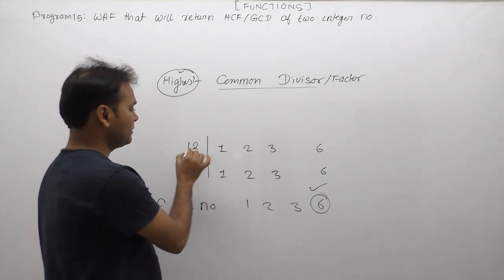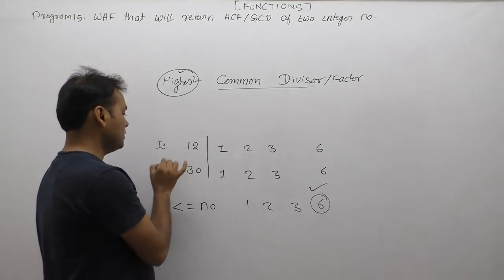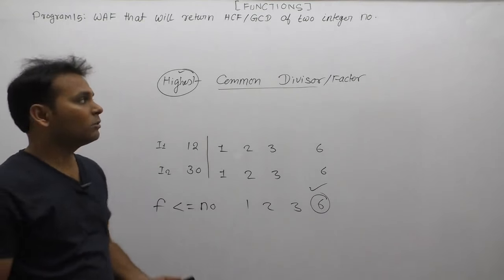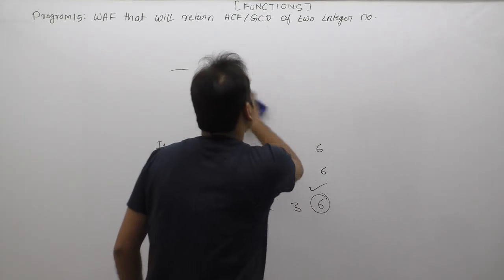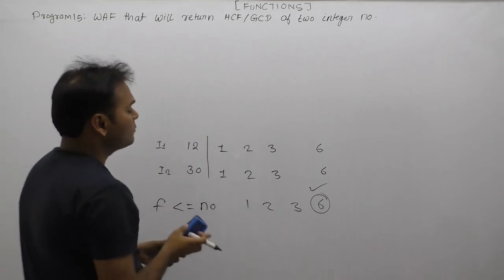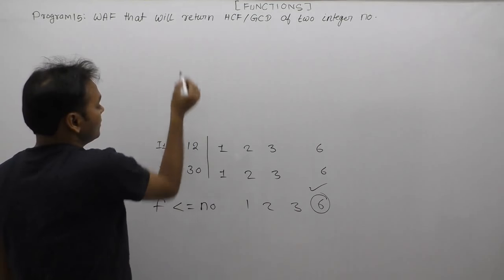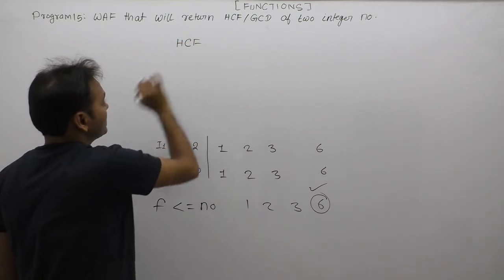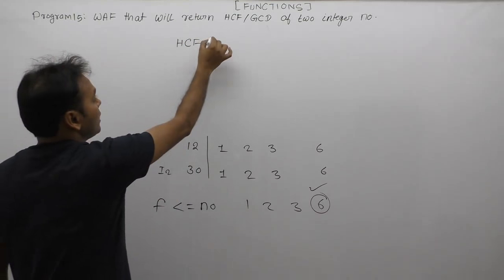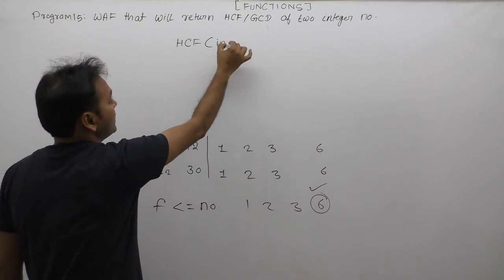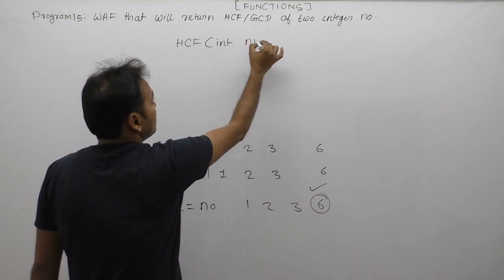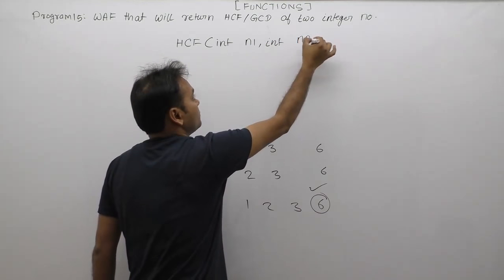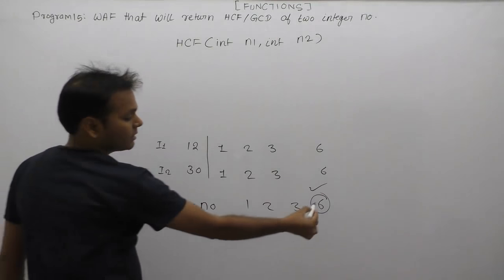Therefore, for input values 12 and 30, the function should return 6. This function takes two inputs: input 1 and input 2. Here, I will only discuss the function, not the main function. The function name is HCF. It requires two inputs: integer n1 and integer n2. Next, the return type of the function.